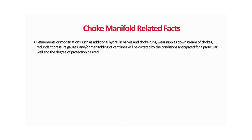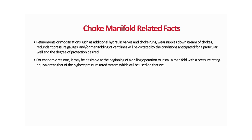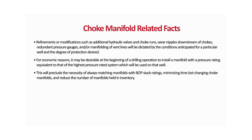Choke manifold related facts. Refinements or modifications such as additional hydraulic valves, choke runs, wear nipples downstream of chokes, redundant pressure gauges, or manifolding of vent lines will be dictated by the conditions anticipated for a particular well. For economic reasons, it may be desirable at the beginning of a drilling operation to install a manifold with a pressure rating equivalent to the highest pressure rated system to be used on that well. This will preclude the need to always match manifolds with BOP stack ratings, minimize time loss changing manifolds, and reduce the number of manifolds held in inventory. Screwed connections are optional for only the 2M manifold; all others shall be welded or flanged.